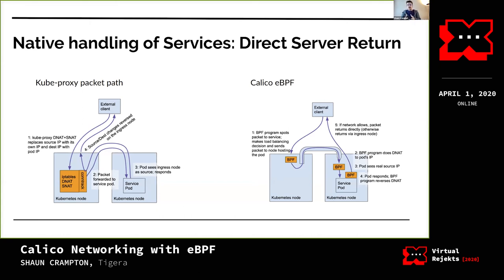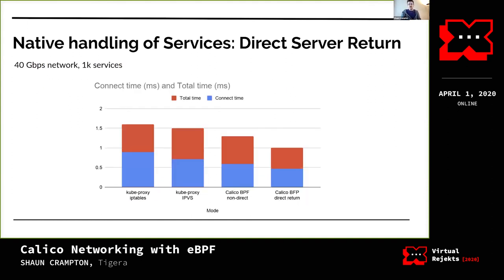Once we've done that, with the superpowers of BPF we're able to do direct server return, where we skip the hop back to the original host and send the packet straight back to where it came from — taking out another network hop. This graph shows the improvement in connect-time latency and single request-response latency by removing that extra hop on our test bed — the same 40 gig test bed. It shaves off about half a millisecond on the round trip time versus kube-proxy with SNAT going all the way back to the original host.